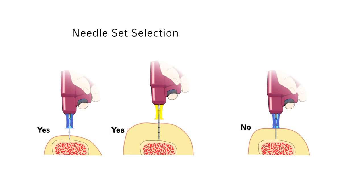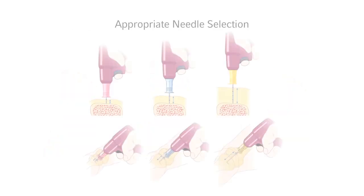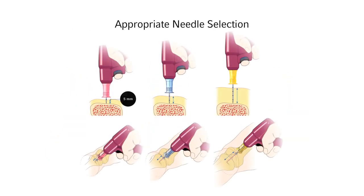Using a needle set that is too short will increase the risk of catheter dislodgement, leading to extravasation, create a hole in the bone unnecessarily, and render the site unusable for future IO access for a minimum of 48 hours. Appropriate needle selection is evidenced by the black 5 mm mark visible above the skin when the tip of the needle set is touching the bone prior to drilling.